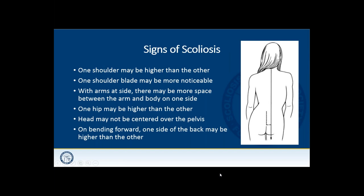What are the signs of scoliosis? Typically they're evaluated from the back, where you can see the anatomy more clearly. One shoulder may be higher than the other; one shoulder blade may be more noticeable. The sleeves of a shirt may appear uneven, and one hip may be higher than the other so pant legs appear uneven. The head may also be shifted slightly so you're not standing straight. On bending forward, one side of the back may be higher than the other.